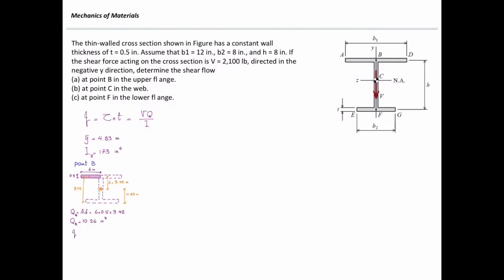The shear flow at point B is VQ divided by I. The shear force is 2,100 pounds, Q is 10.26 in³, and the moment of inertia is 173 in⁴. Note that V and I remain constant throughout; only Q changes depending on the point of interest. The shear flow at point B equals 124.5 pounds per inch.